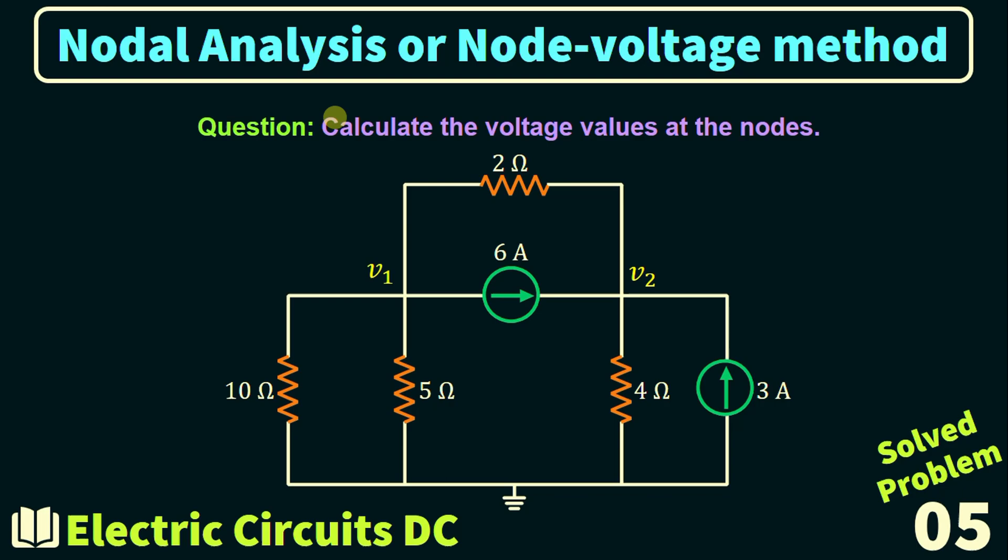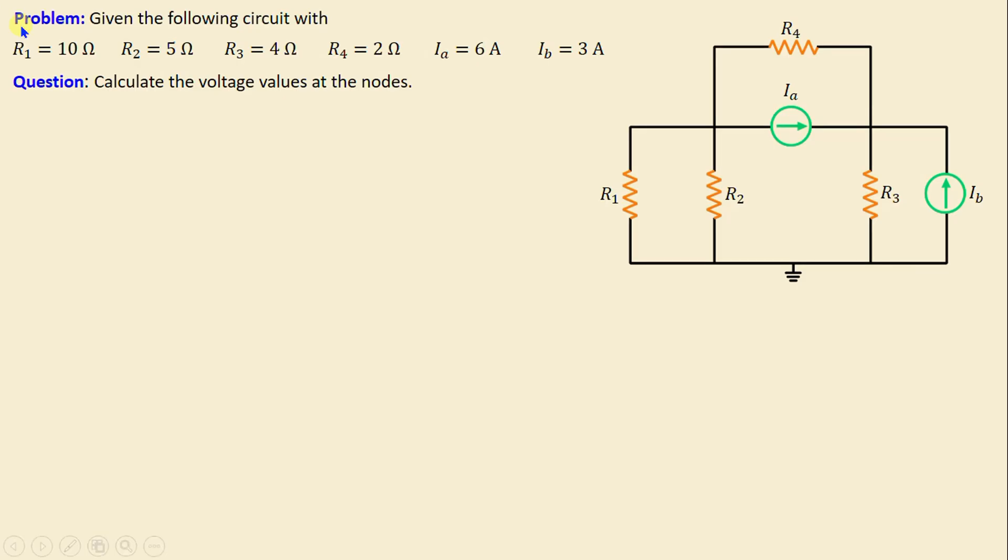Greetings, welcome to this new video about nodal analysis or node voltage method. We'll solve problem number five. Let's consider this network consisting of four resistors labeled R1 through R4, as well as two independent current sources Ia and Ib. The question is to calculate the voltage values at the nodes.